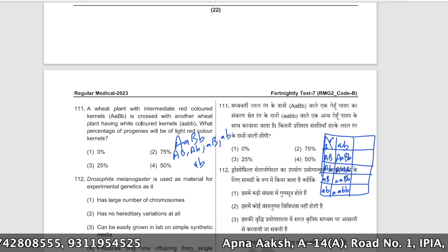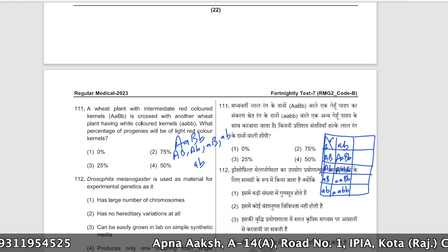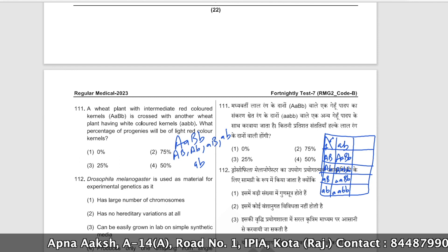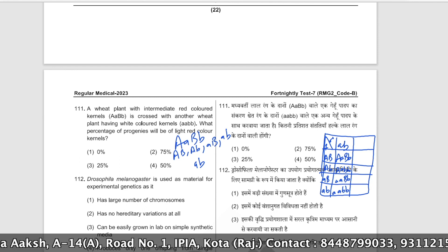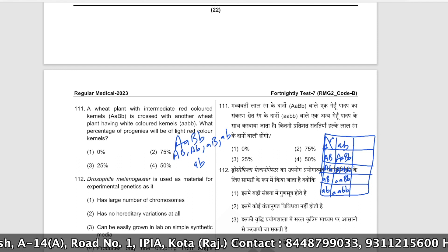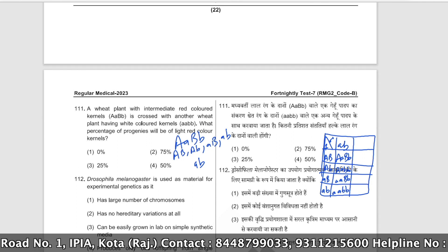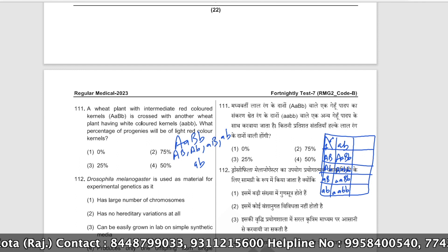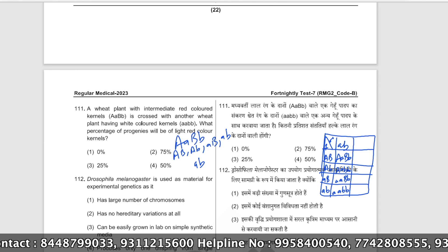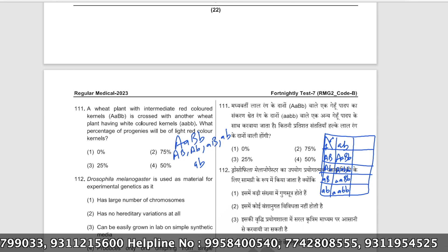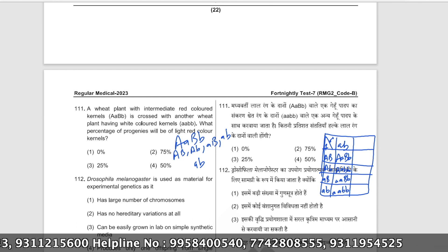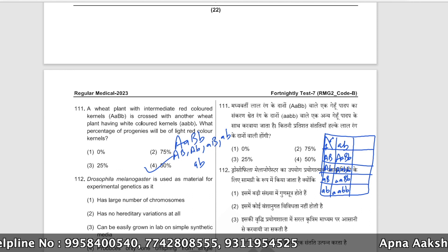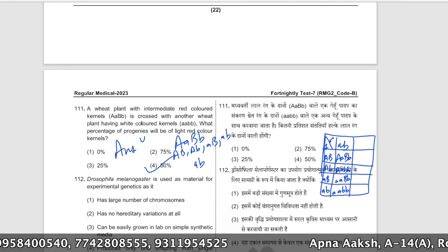Looking at the Punnett square for the AABB × aabb wheat cross, the percentage of progenies with light red color kernels will be 50%. The correct answer is option number four.